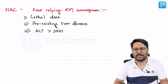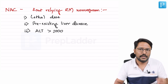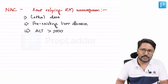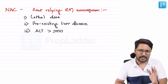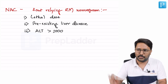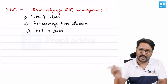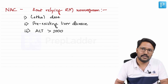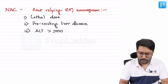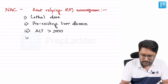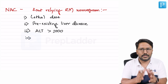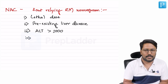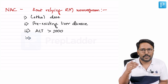Third circumstance: when ALT is more than 1000, start N-acetylcysteine immediately, because there is already evidence of liver injury. Whether caused by paracetamol or something else, added paracetamol can worsen the situation — treat with N-acetylcysteine regardless.